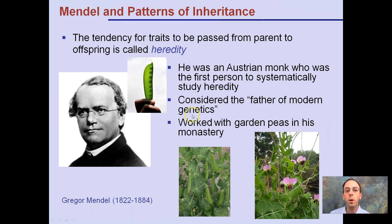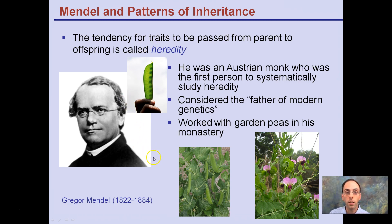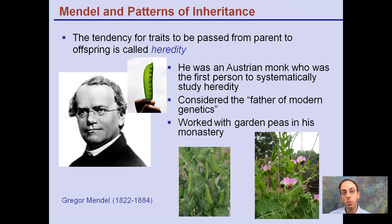Since we're talking about Gregor Mendel, it's a good thing he didn't do pumpkins — he was looking at pea plants. The reason why it's a good thing is that peas do not show these blended traits. They show a clear dominant-recessive trait. There's no in-between effect, no sliding scale — it's either expressed or it isn't. It produces purple flowers or white flowers, not pink or light purple. It's one or the other.